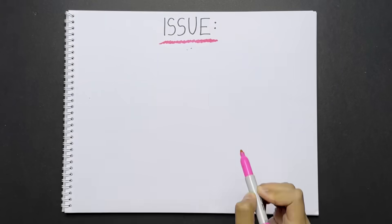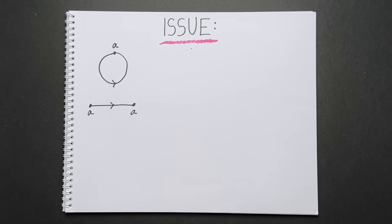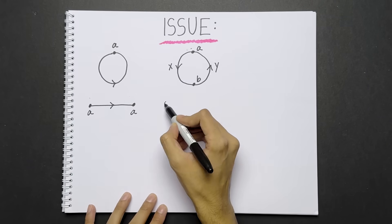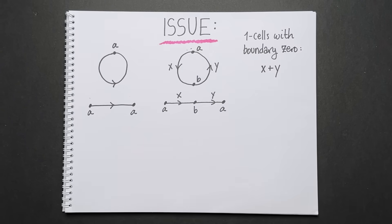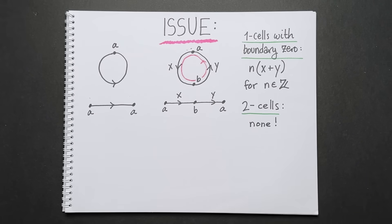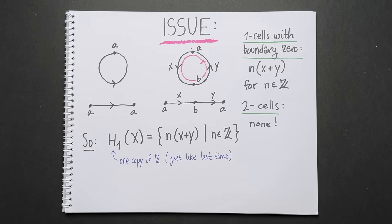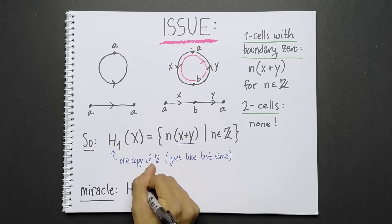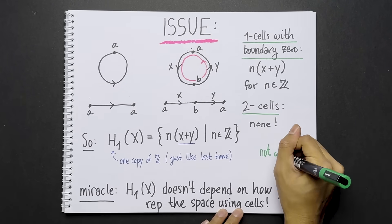But now we run into an issue. Consider the circle. Earlier, we represented our circle like this. But we can easily represent it in another way, say like this. What's the homology now? We see that the one cells with boundary zero are x plus y and any integer multiple of this. There are no two cells. So the homology is still one copy of the integers, just like last time. But even more, in both cases, the generator of H1 is still representing the same thing, a loop that goes around the circle once. Here's a miracle. The homology groups of a space do not depend on how we choose to represent the space using cells. This is a highly non-obvious theorem.